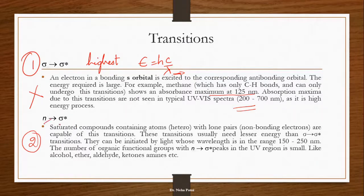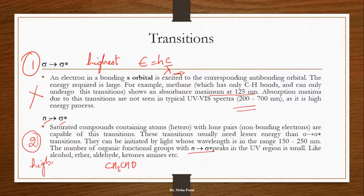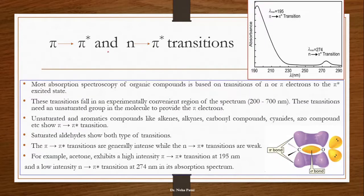For n→sigma*, the molecule has a lone pair with a single bond — like aldehydes or ketones. The energy requirement is high, giving wavelengths around 150–250 nm. This is near UV, so sometimes a very small peak may be observed. However, clear UV peaks are visible for pi→pi* and n→pi* transitions, since those have lower energy requirements and fall in the UV-visible range.